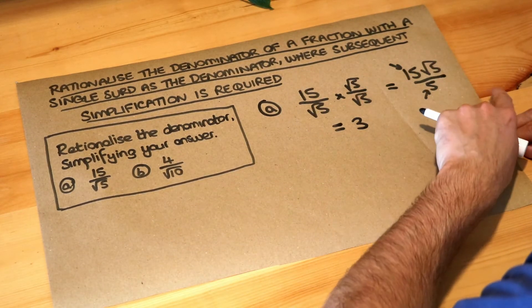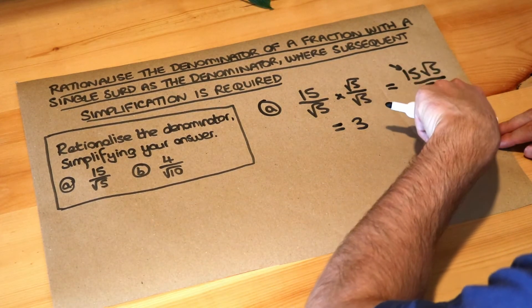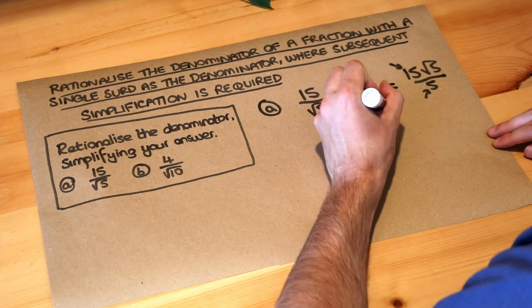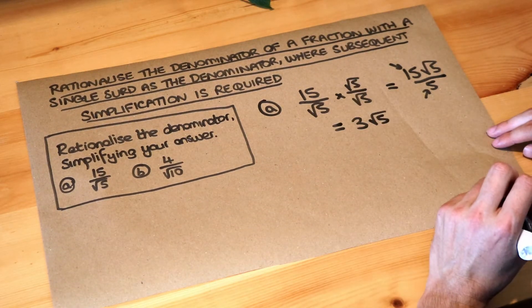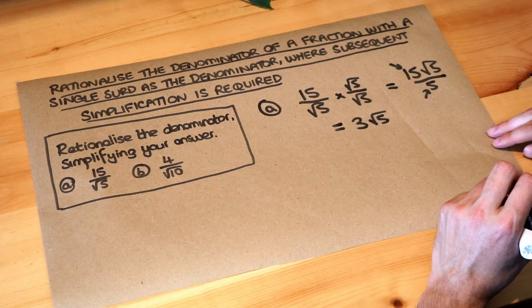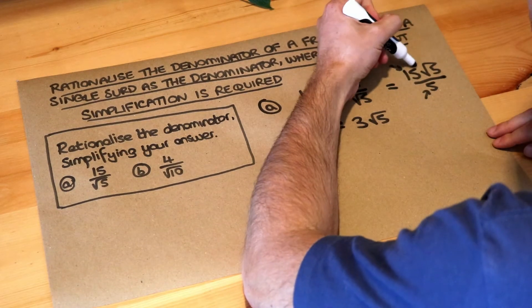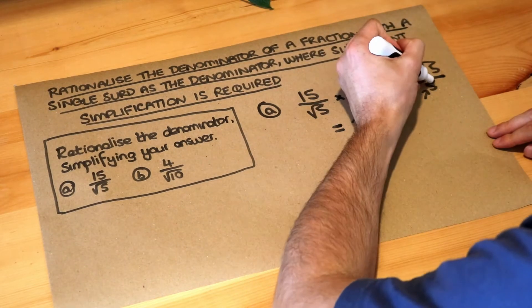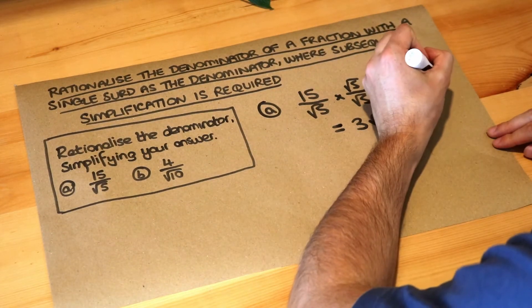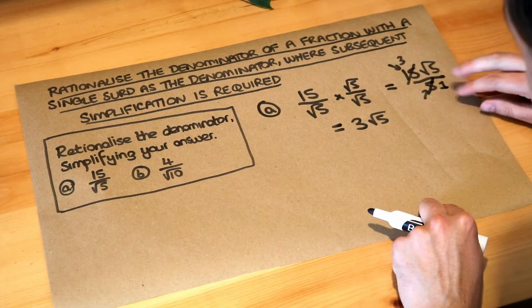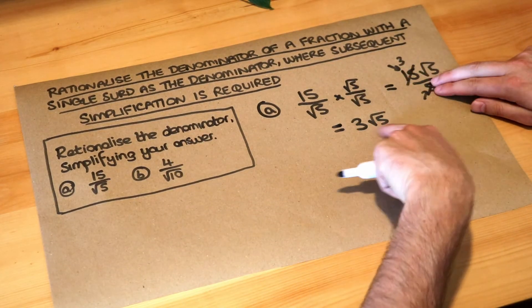And then you divide any surds. We've got root 5 over, well there's nothing there, so we just have the root 5. And we're left with 3 root 5. Another way of thinking about it is that we could divide top and bottom of the fraction by 5. So divide that by 5, you get 3. Divide the bottom by 5, you get 1. And anything over 1 is just itself, so you're left with 3 root 5.